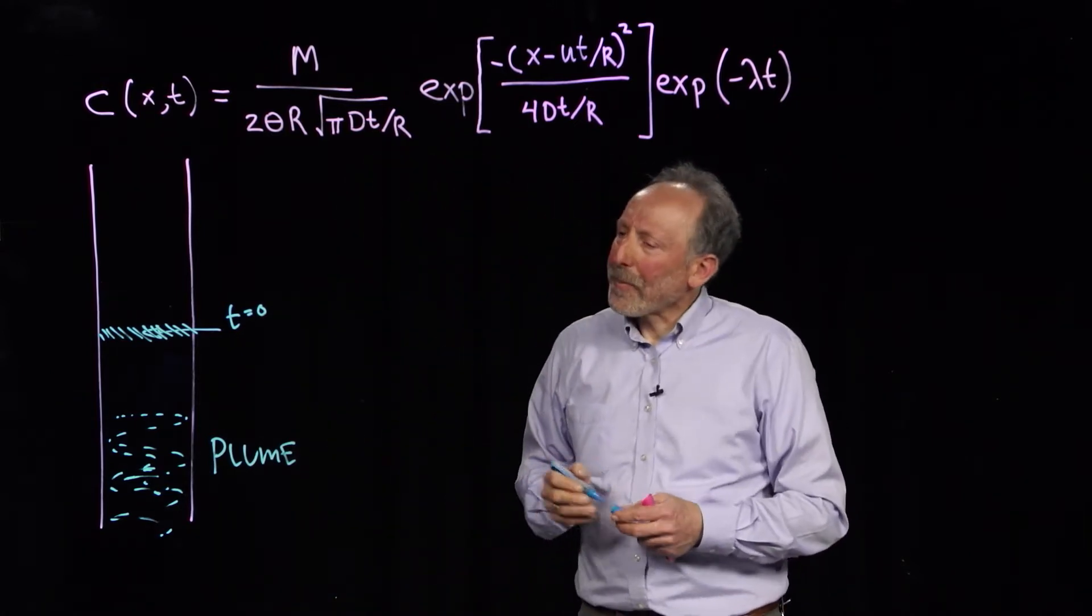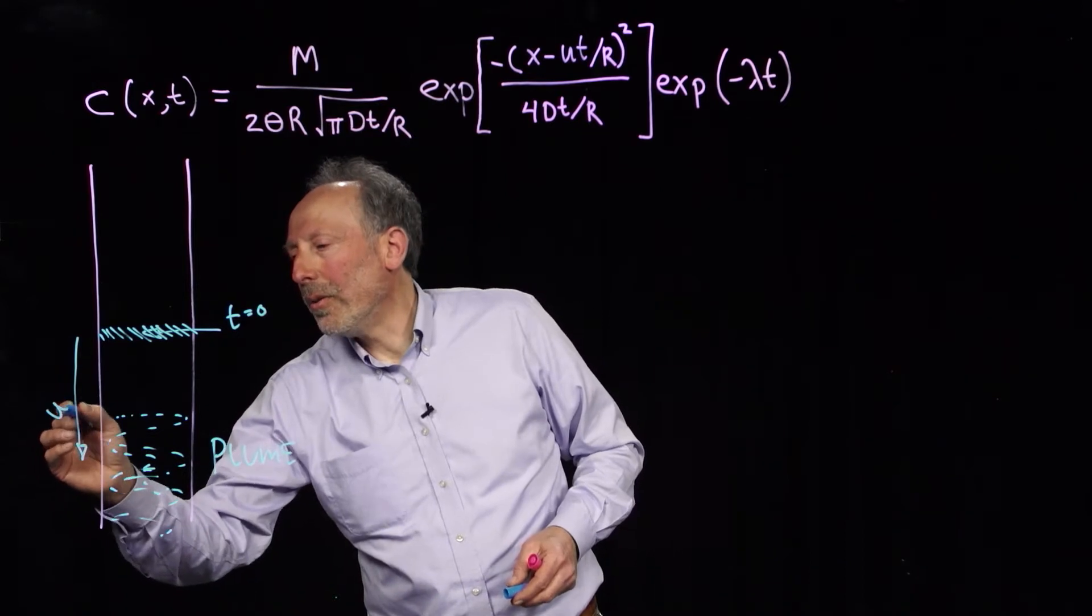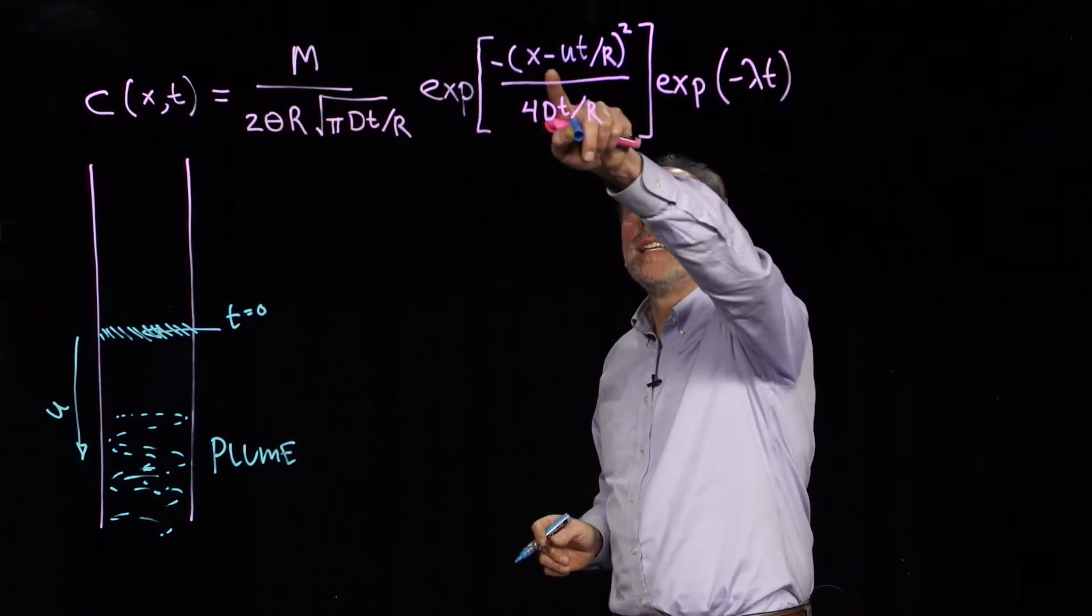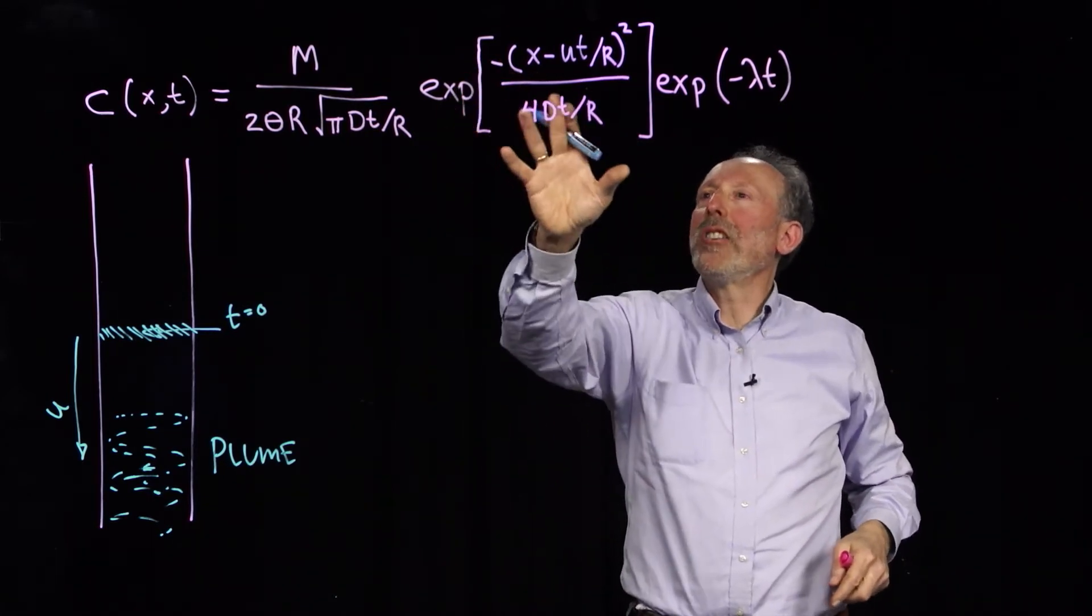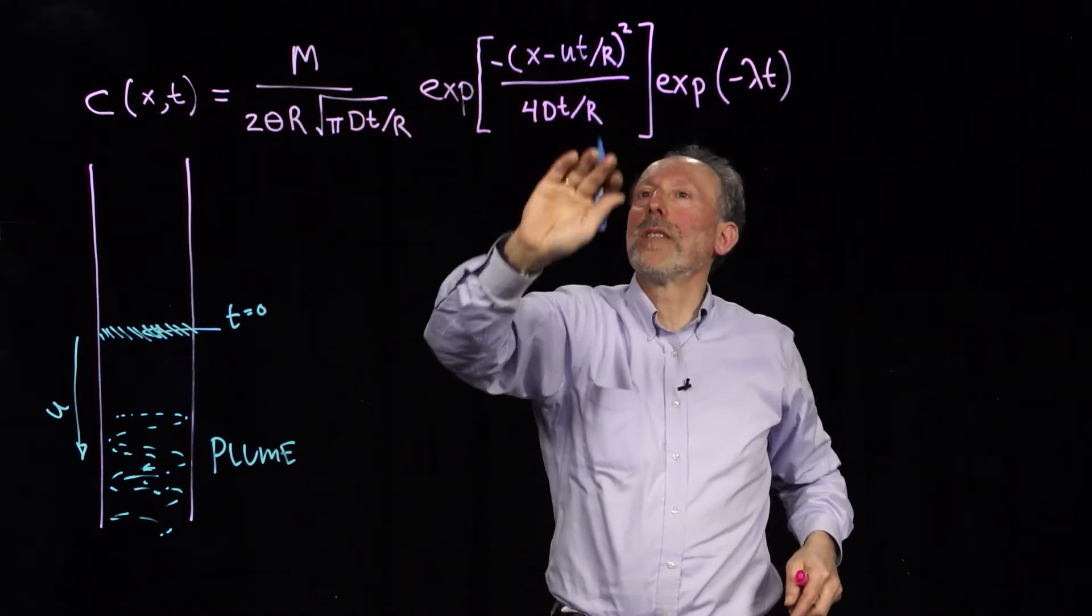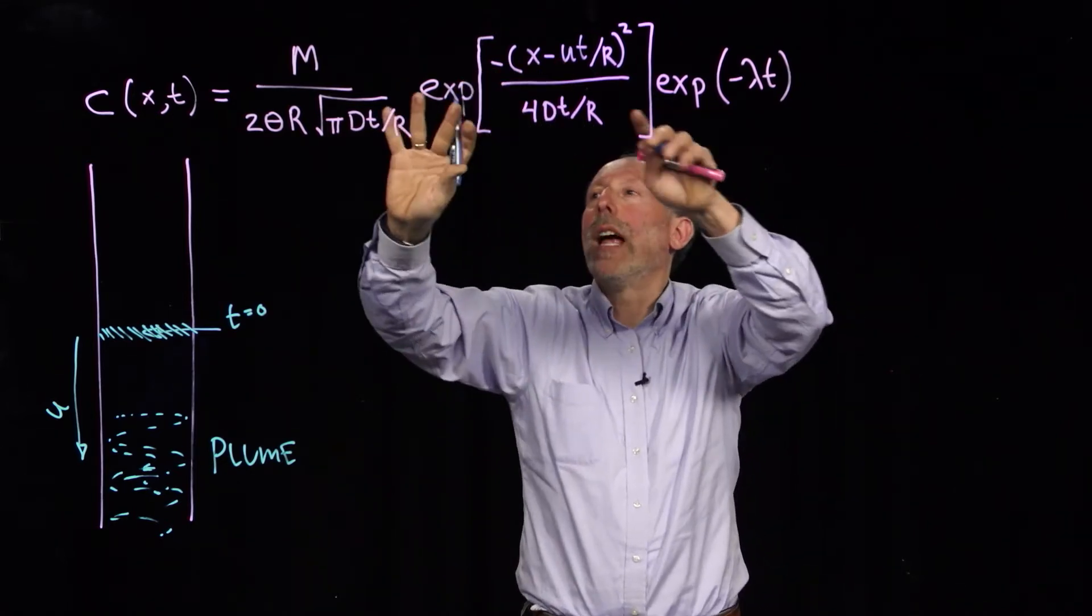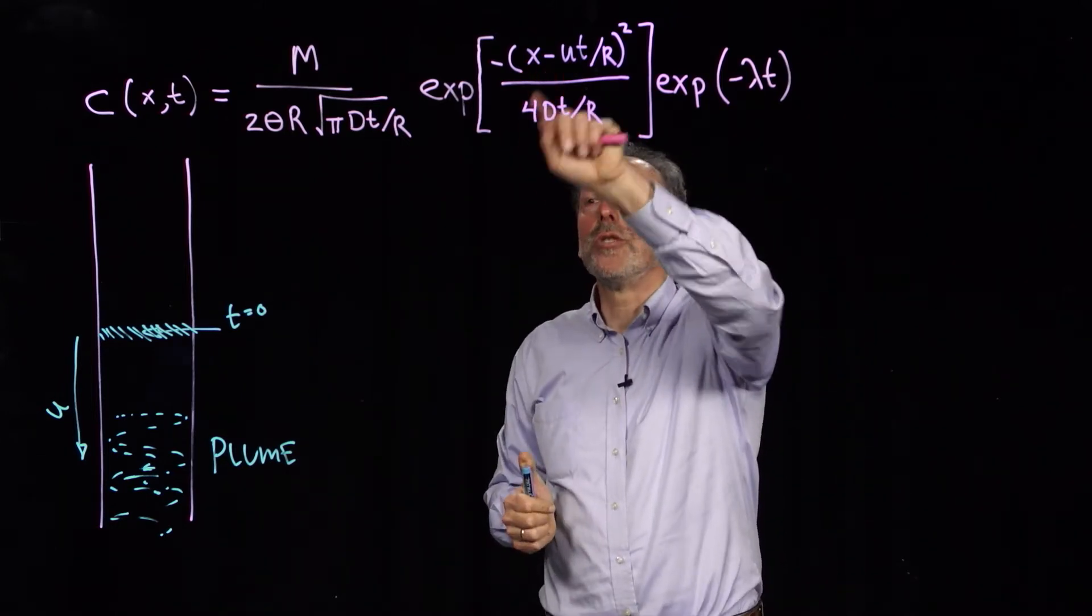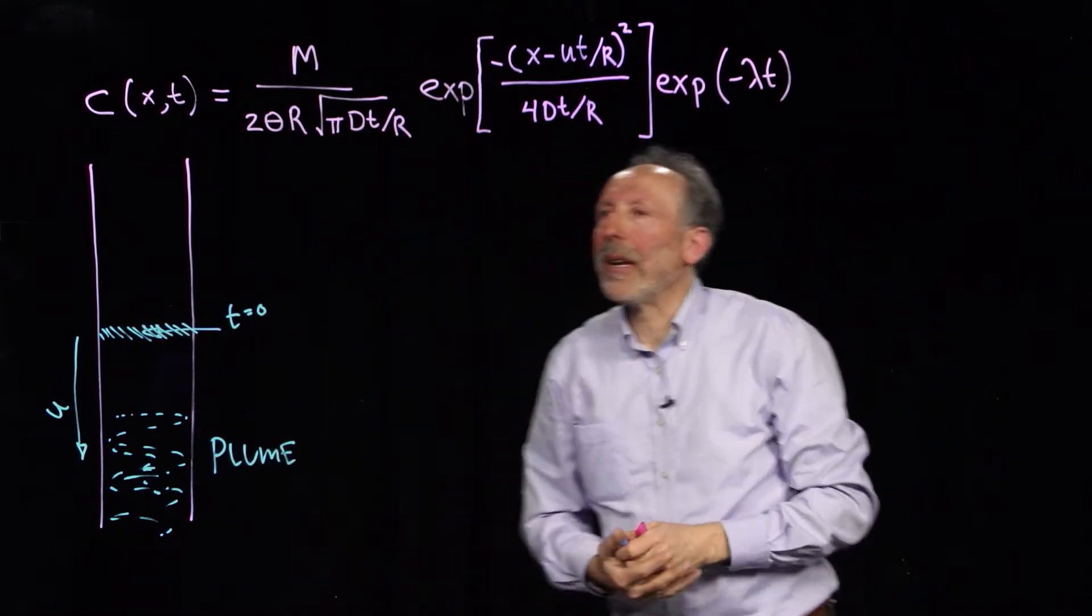Now this solute moves at a velocity u. And when we look at the solution, we see that the peak concentration happens when this term is zero. Since this is a positive number but there's a negative sign, as this gets bigger, everything else gets smaller. So the peak concentration happens when x equals ut. That's a translating wave of contaminant moving down through the column.